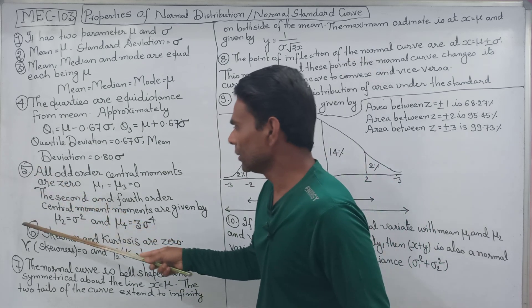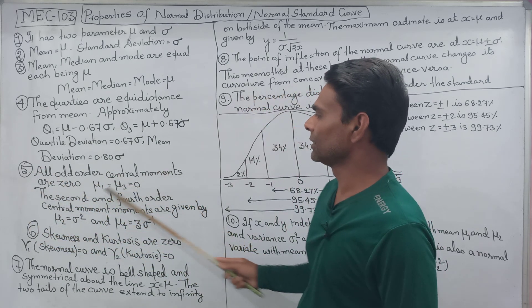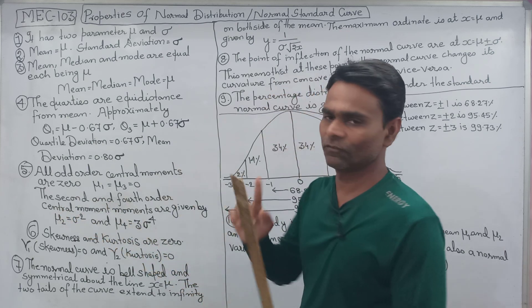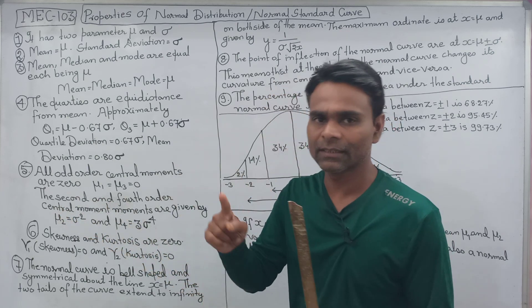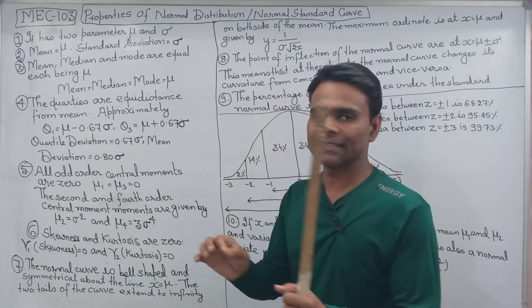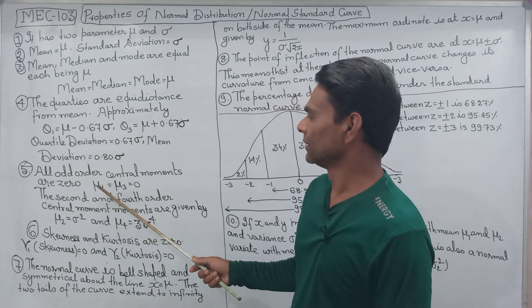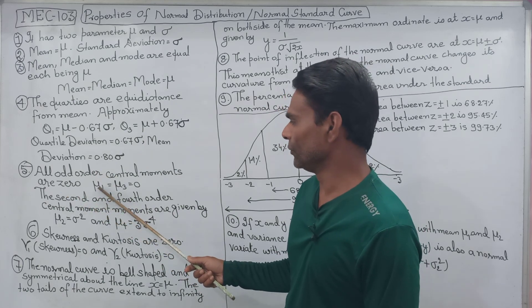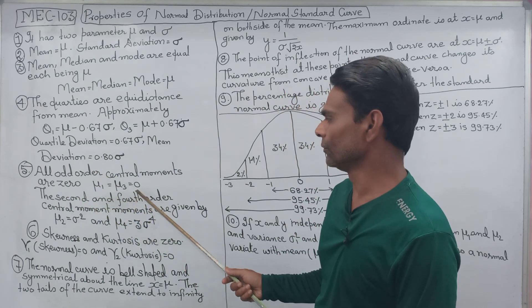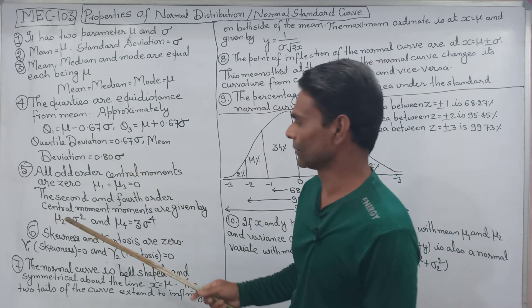Mean deviation value is 0.80 sigma. All odd order central moments are zero — that means the first and third order central moments are both zero.